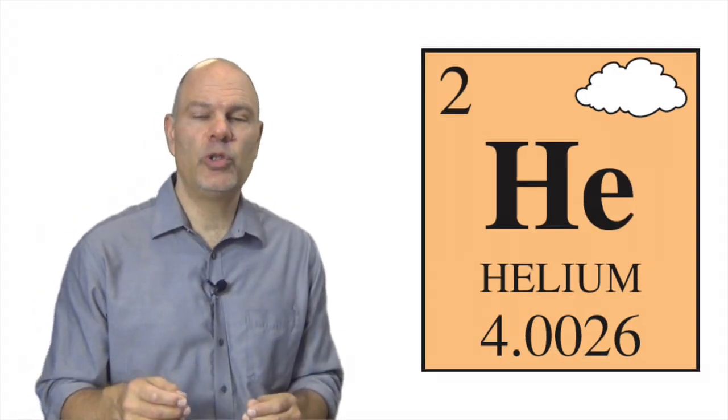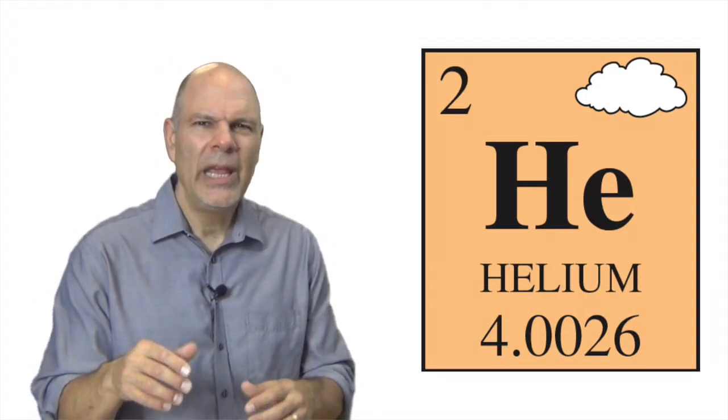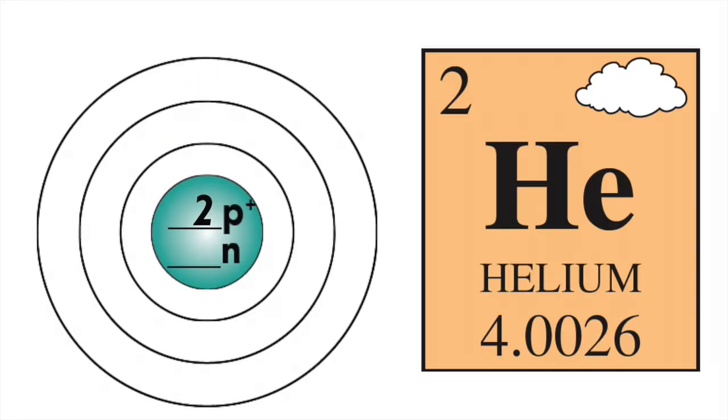Helium, the stuff we fill helium balloons with, is the second smallest element. Helium's structure is like this. It has two protons, two neutrons. They go in the nucleus. Two electrons orbit outside. They both go into the first orbital.